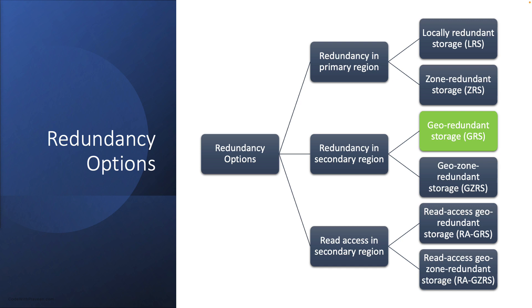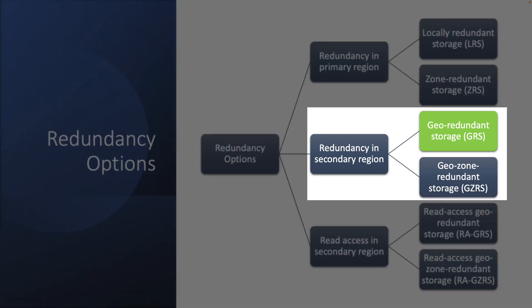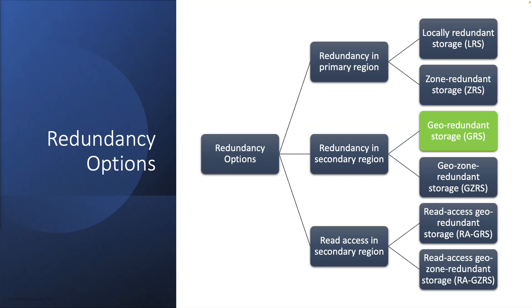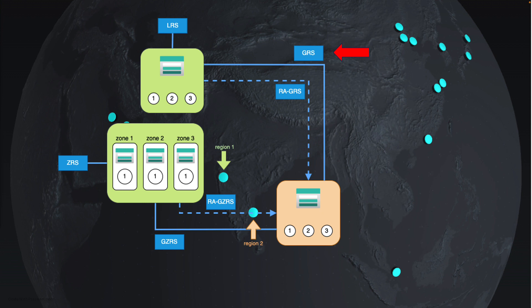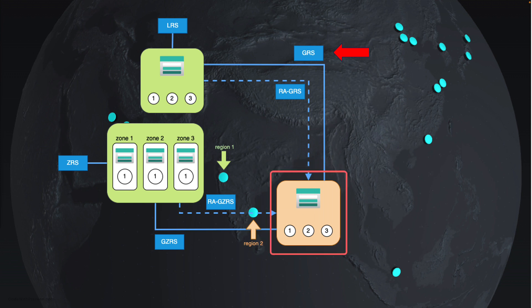Regarding redundancy in the secondary region, you have two options: Geo Redundant Storage, shortly GRS, and Geo Zone Redundant Storage, GZRS. GRS copies your data synchronously within the primary region and asynchronously to a secondary region, ensuring at least 16 nines of durability. However, data in the secondary region is only available after a failover or with read access enabled. In this image, the primary region with three data copies is replicated to the secondary region, which also has three copies. Hence, even if the Central India region is down, the data is available in the South India region.